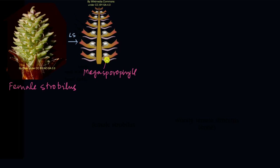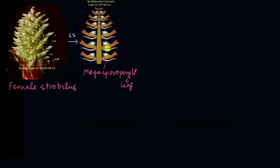Each of these is a megasporophyll. Why is it called a sporophyll? 'Spore' you know, and 'phyll' stands for leaf. So these are modified leaves — each is a modified leaf which contains spores in it, and that's why it's called the sporophyll.